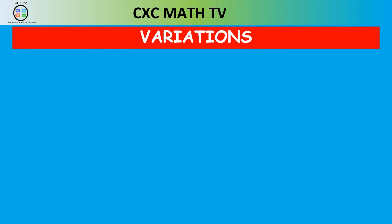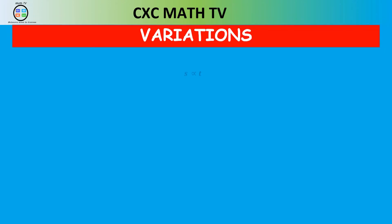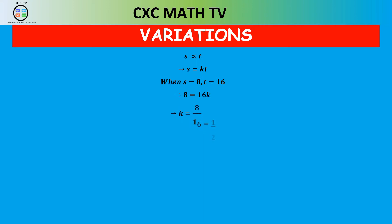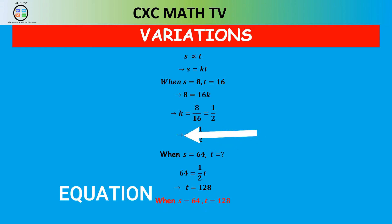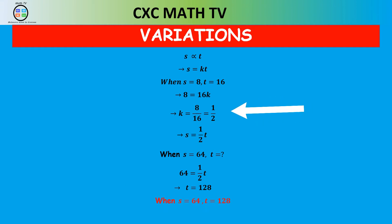Since they're proportional, s is proportional to t, so we can write s equals a constant times t. When s equals 8, t equals 16; plugging those into the equation gives k equal to 8 over 16, which is one half. So s equals one half t. When s is 64, we plug that into the formula and transpose, getting t equals 128. The direct variation equation is s equals one half t, and the variation constant is one half.